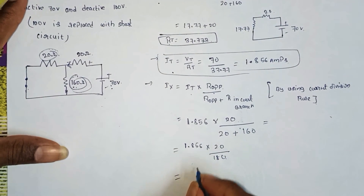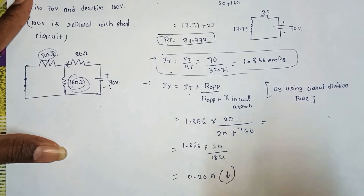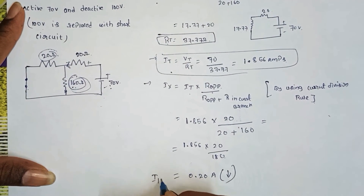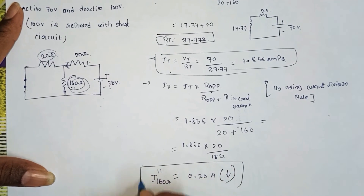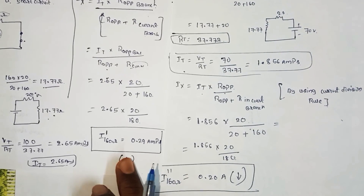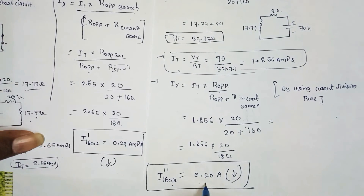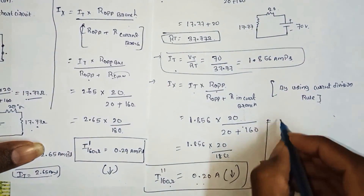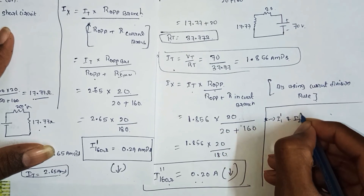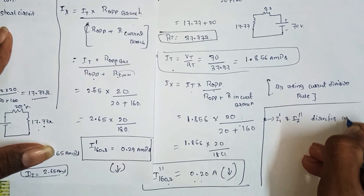The result is 0.20 amps. It is in the downward direction. So I double dash 160 ohms equals 0.20 amps. Both step 1 and step 2 currents — I dash and I double dash — have the same downward direction.